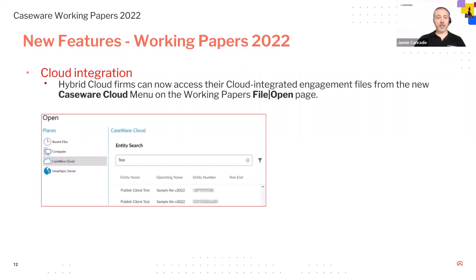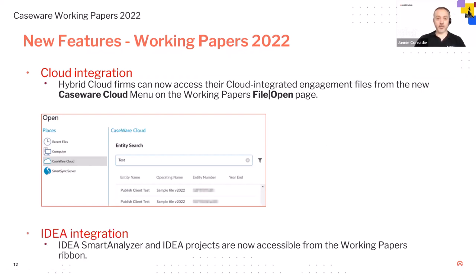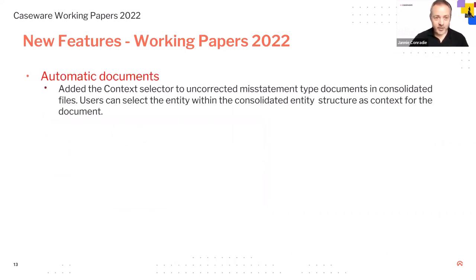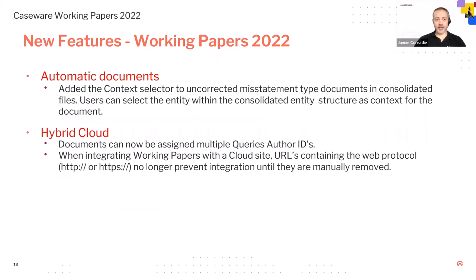Let's have a quick look at some of the new features in Working Papers 2022. For cloud integration, hybrid cloud firms can now access their cloud integrated engagement files from the new CaseWare Cloud menu on the Working Papers file open page. The IDEA integration — James will take you through in his recording — but your IDEA Smart Analyzer and IDEA projects are now accessible from the Working Papers ribbon. For automatic documents, we've added the context selector to uncorrected misstatement type documents in consolidated files, so users can now select the entity within the consolidated entity structure as context for the document.